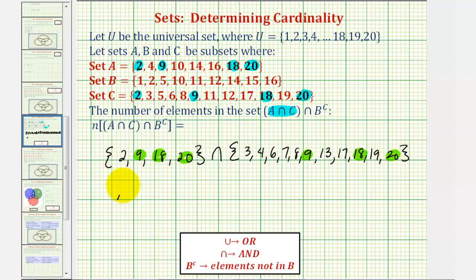So we just found that A intersect C intersect B complement contains the elements nine, eighteen, and twenty. Notice how this set has three elements, and therefore the number of elements in A intersect C intersect B complement equals three. Again we have one, two, three elements in this set, which is the cardinality of this set.